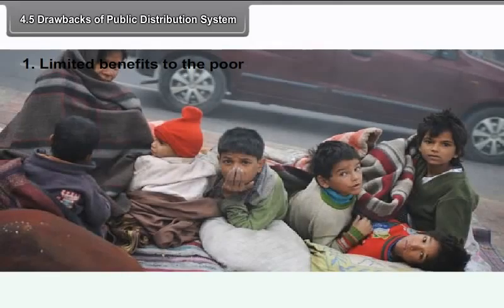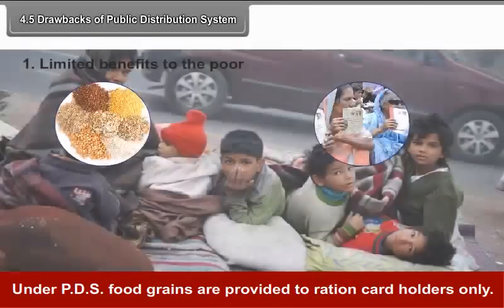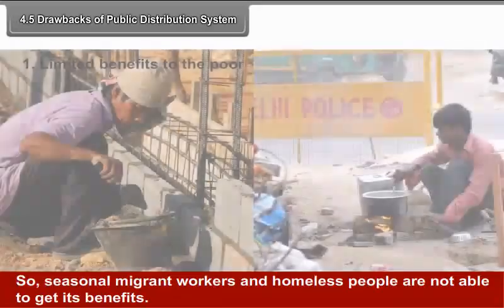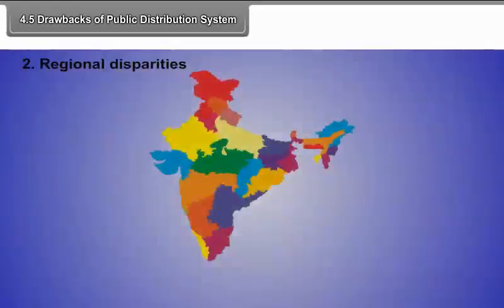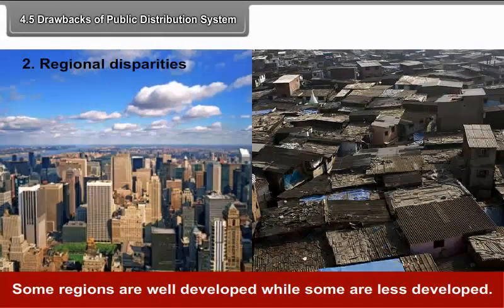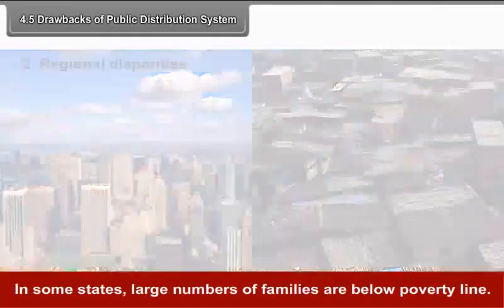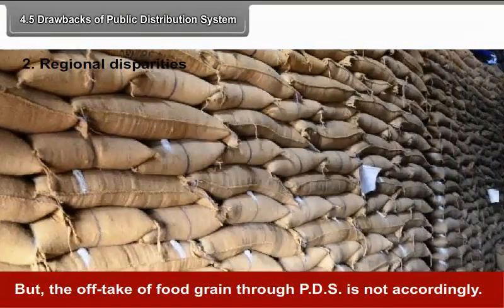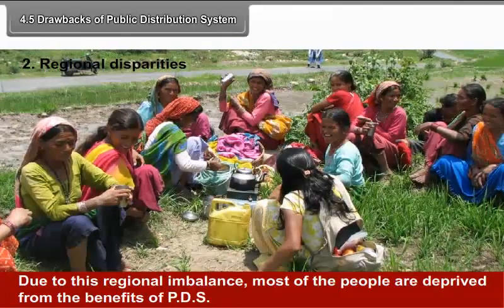4.5 Drawbacks of Public Distribution System. 1. Limited benefits to the poor: Under PDS, food grains are provided to ration card holders only. These ration cards are issued on the basis of residential address. So, seasonal migrant workers and homeless people are not able to get its benefits. 2. Regional disparities: Some regions are well developed while some are less developed. In some states, large number of families are below poverty line, but the offtake of food grain through PDS is not accordingly. Due to this regional imbalance, most of the people are deprived from the benefits of PDS.